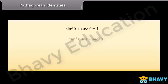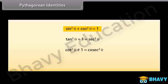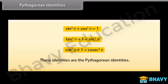Pythagorean identities. Have a look at these identities: sin squared theta plus cos squared theta is equal to 1; tan squared theta plus 1 is equal to sec squared theta; cot squared theta plus 1 is equal to csc squared theta. These identities are the Pythagorean identities.